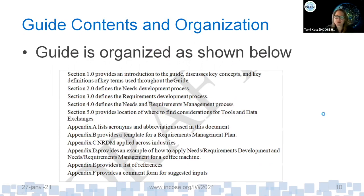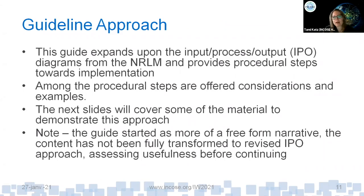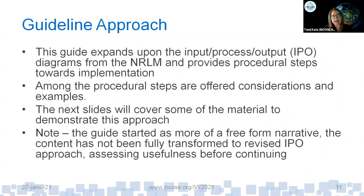On the approach to the guide: this particular guideline is expanding upon the input-process-output (IPO) diagrams in the manual. The IPO diagrams really bring to life all the interrelationships of activities — what you need to go get, what you're putting out, and the stuff you need to do to make that happen. What Kevin envisioned is that the guideline speaks to that 'stuff you need to do.' He speaks to the IPO diagrams very specifically and then offers procedural steps — step one, step two, step three. Another option would be more of a table or series of checklists.